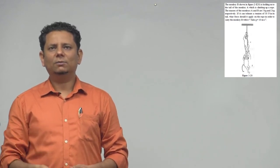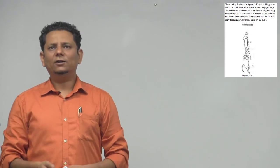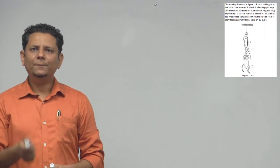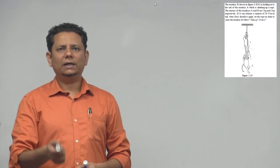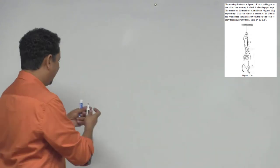The masses of the monkeys A and B are 5 and 2 kg respectively. If A can tolerate a tension of 30 newton in its tail, sawaal hai, what force should it apply on the rope in order to carry the monkey B with it. Aur G ki value 10 le sakte hai, aisa ame kaha gaya hai.